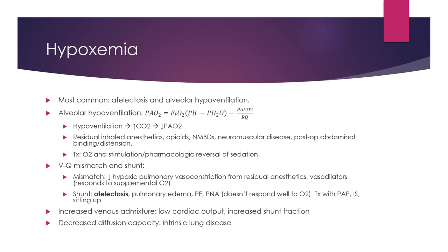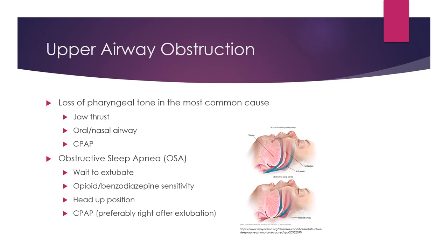Upper airway obstruction is one of the more common causes of hypoventilation in the PACU. The most common reason is loss of normal pharyngeal tone. In awake patients, pharyngeal muscles contract and stent the airway open during negative pressure breathing. With residual anesthetic effects, the muscles collapse and block the airway, creating a vicious cycle of increasingly negative force and further airway collapse. Most patients require jaw thrust or an oral/nasal airway; occasionally CPAP may be necessary.